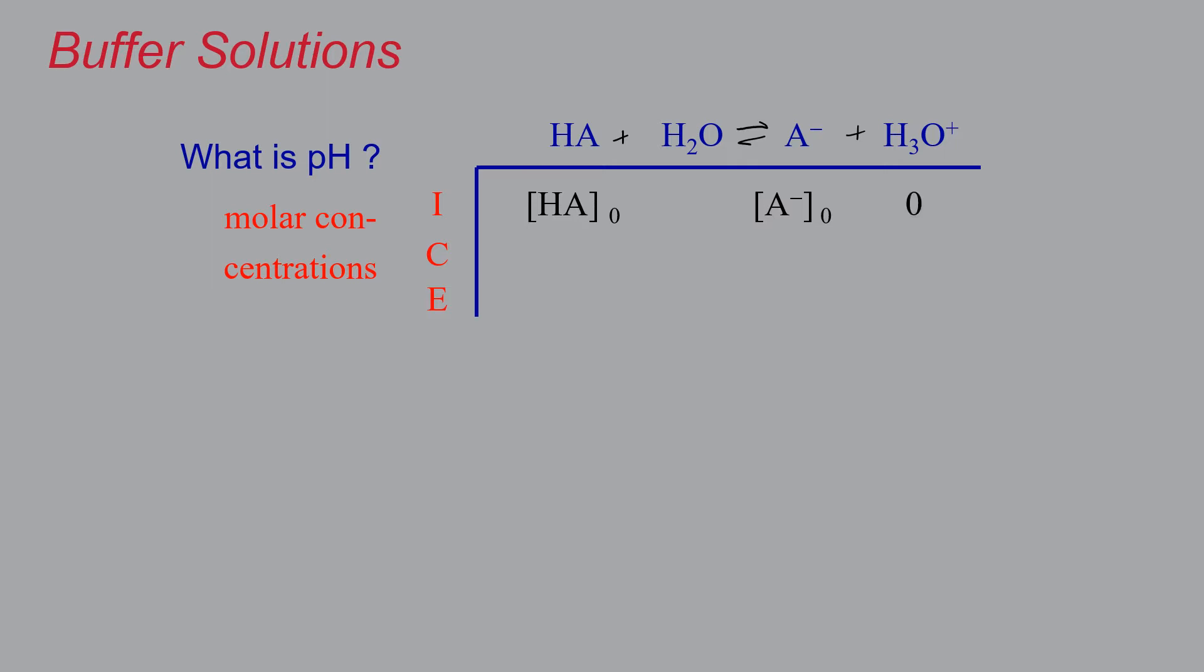And we're going to assume that the initial hydronium concentration is zero. And because of that, you can assume some forward progress, which means we will lose some amount of the HA, giving us [HA]₀ minus x molar concentration at the end. We're going to gain x molar concentration of A⁻, giving us [A⁻]₀ plus x molar at equilibrium. And for the hydronium, we're going to gain x molar as well and give us x molar hydronium at equilibrium.